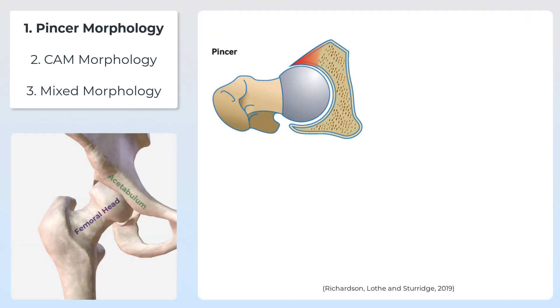The first type is a pincer morphology. This is where we have an overcoverage of the femoral head by the acetabulum — basically where the acetabulum, that socket feature of the pelvis, reaches a little bit too far over the top of the femoral head. This appears to be more prevalent in women, which is possibly due to the differences in female anatomy.